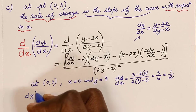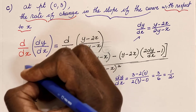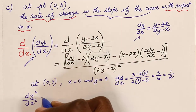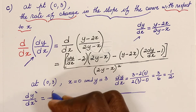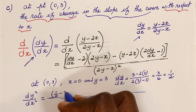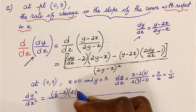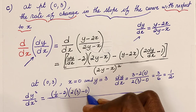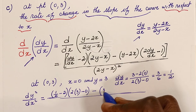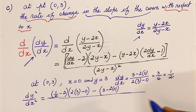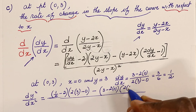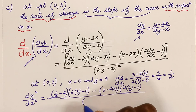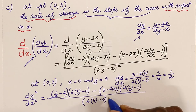We have everything to substitute back into the general expression. dy dx equals one half, x equals 0, y equals 3. So it's: (one half minus 2) times (2 times 3 minus 0) minus (3 minus 2 times 0) times (2 times one half minus 1), all divided by (2 times 3 minus 0) squared.